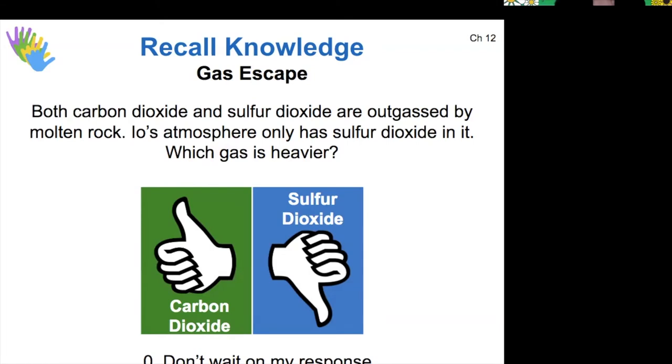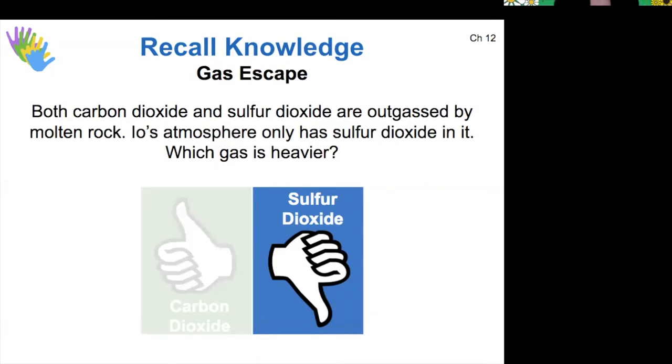Let me make this an up and down poll. What contributed to the sulfur dioxide stain? Yeah. So the sulfur dioxide is heavier and therefore its average molecular speed is going to be lower. So it would be less likely to escape.